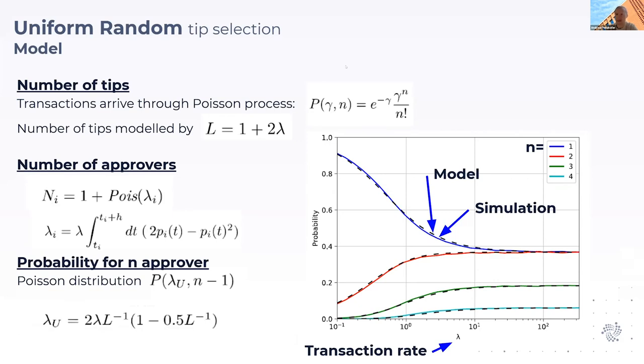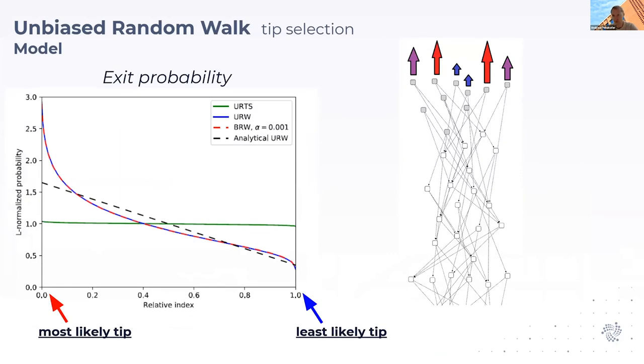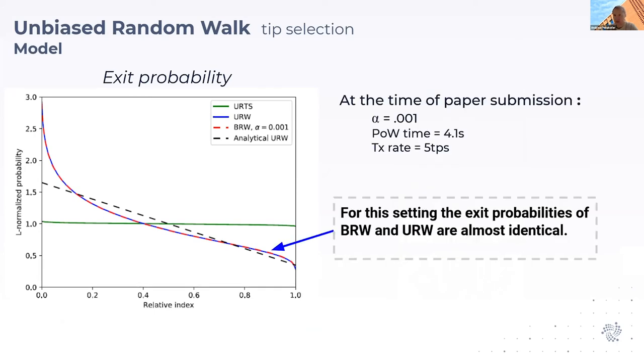This is strongly connected to the unbiased random walk, but the situation is a bit more complicated. With the unbiased random walk, we have different exit probabilities. The normalized exit probability is not one anymore as it would be with uniform random tip selection, but it varies.